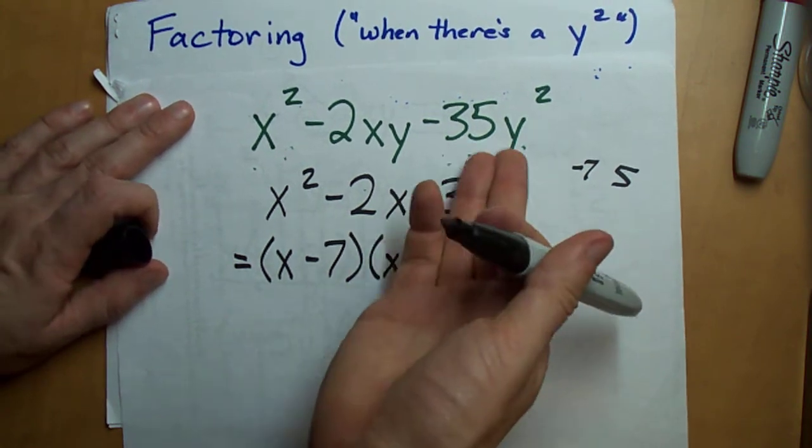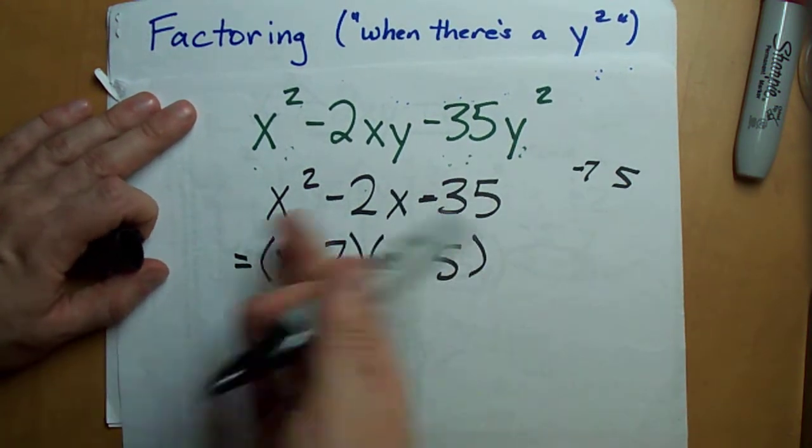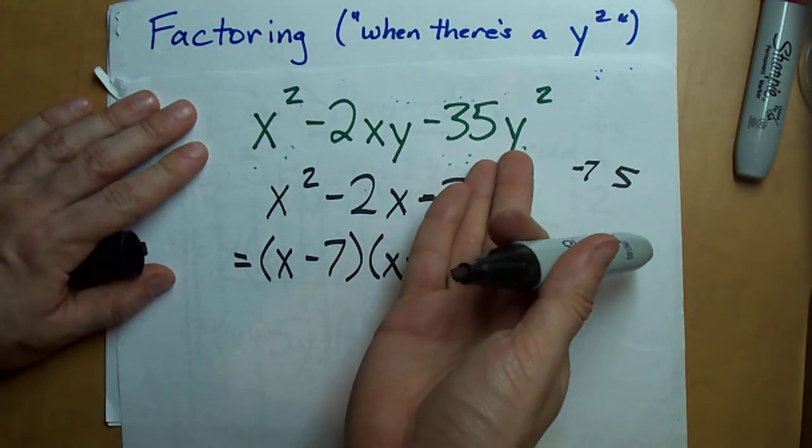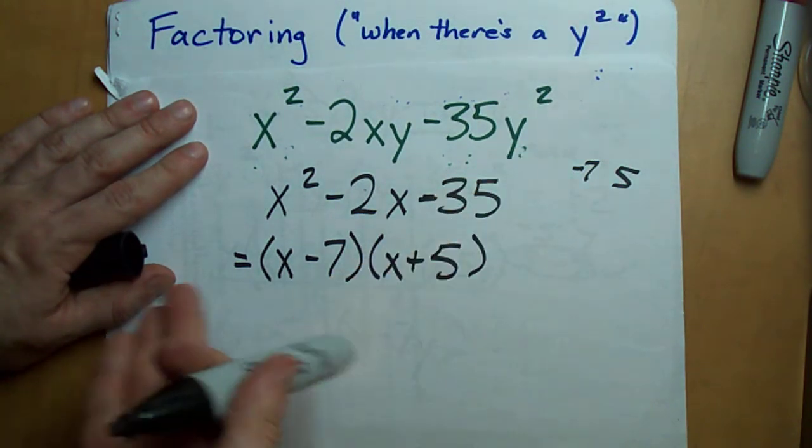Now here comes the cheat way. There was a y squared there. We have to put the y's back in eventually. So when it's y squared at the end, you can usually just do this.